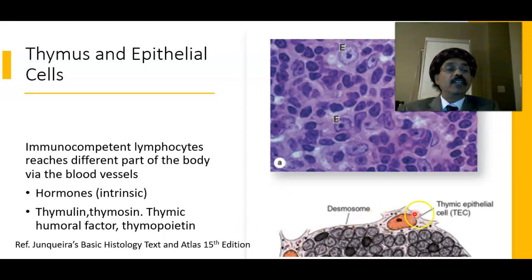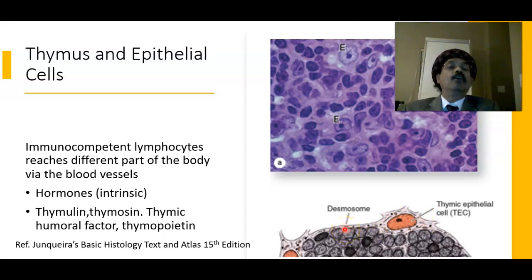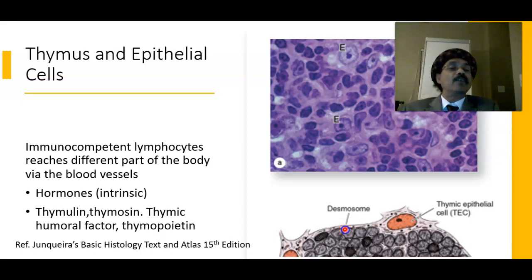The epithelial reticular cell produces hormones including thymosin, thymulin, thymic humoral factor, and thymopoietin. There is intercellular connection between two cells by means of the zonula occludens, which also maintains the blood-thymus barrier.